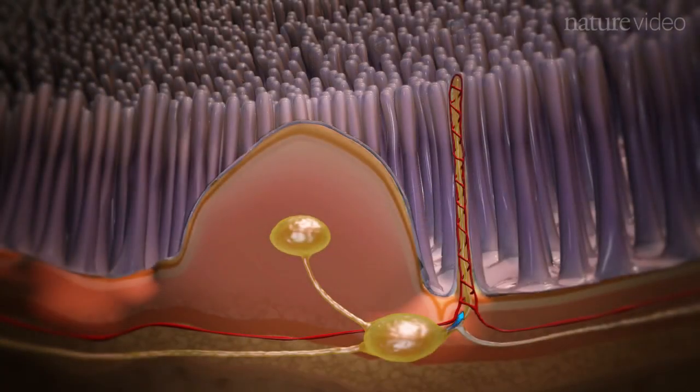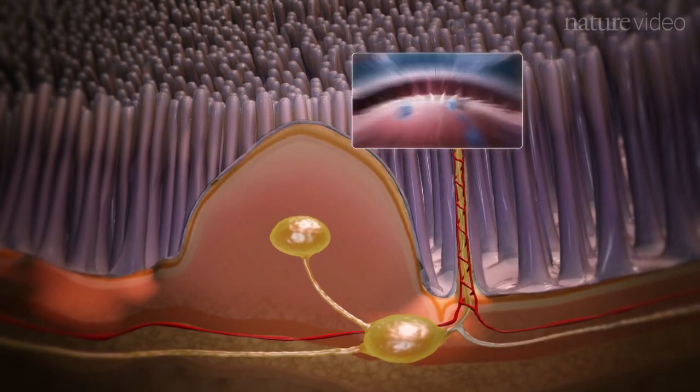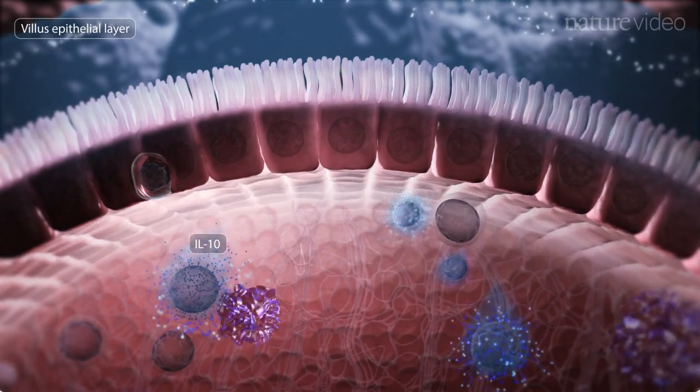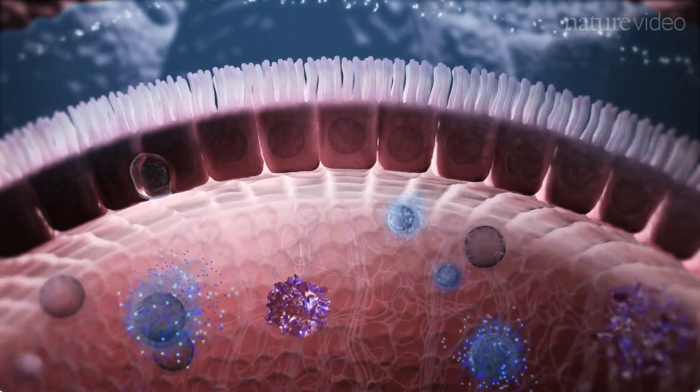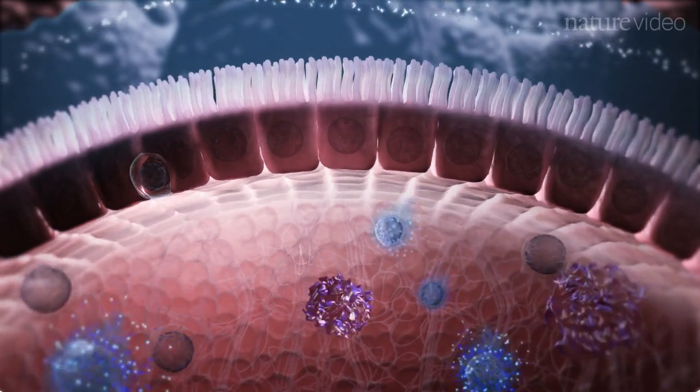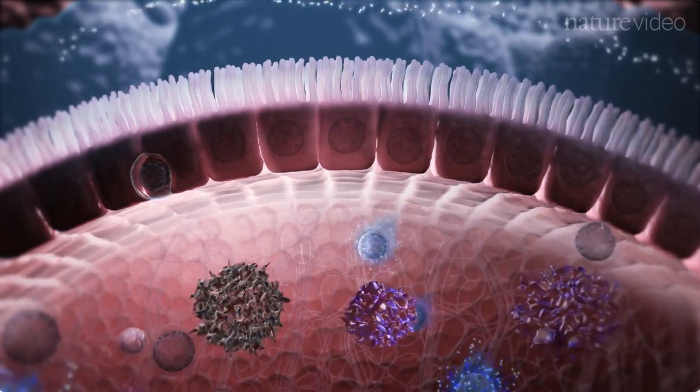These Tregs then migrate to the lamina propria of the villi via the lymphatics. Here, the Tregs secrete a molecule called IL-10 which exerts a suppressive action on immune cells within the lamina propria and upon the epithelial layer itself. IL-10 is therefore critical in maintaining immune quiescence and preventing unnecessary inflammation.